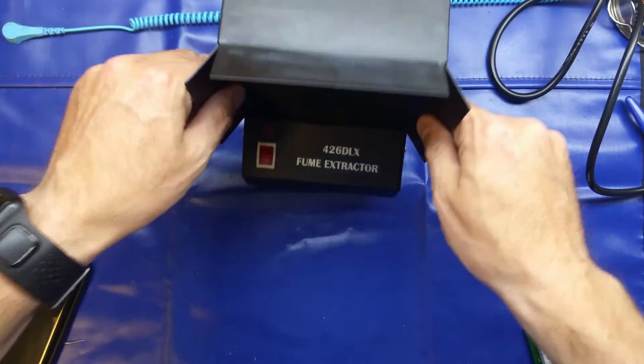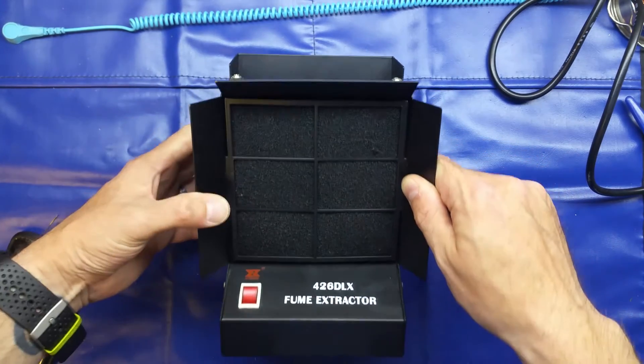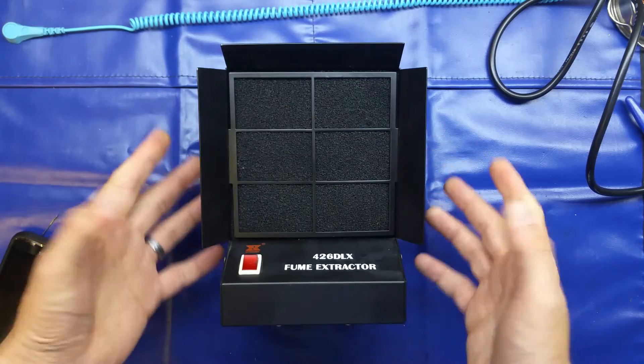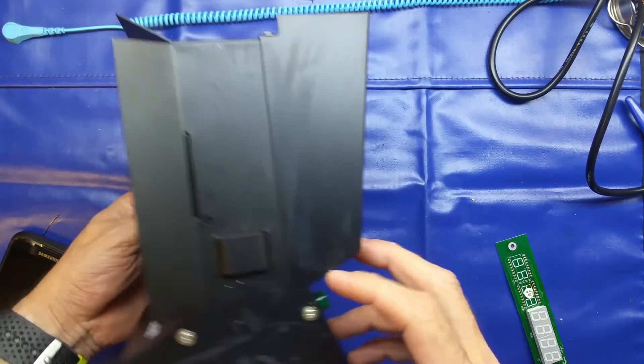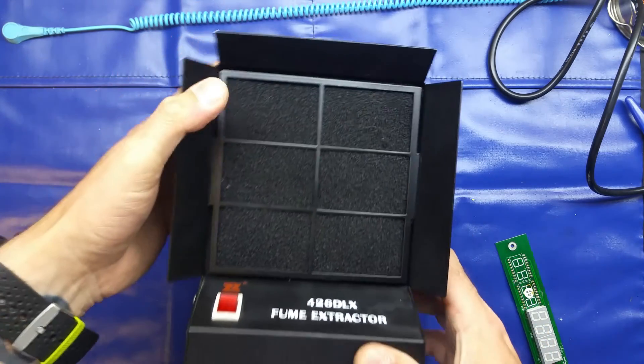I purchased this on Gumtree, from somebody that was getting rid of workshop equipment, for 10 pounds. Just 10 pounds. So, 10% the cost, and it's obviously in fairly good condition, other than where I've messed up the paintwork.